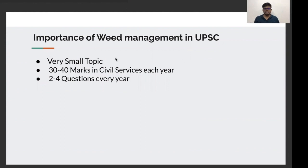We'll be going priority wise. The total weed management unit is a very small topic, and yet every year consistently UPPC is asking 30 to 40 marks worth of questions from weed management — two to four questions every year. Unlike other units where UPPC one year will ask three or four questions and the other year may not ask any, weed management is consistent. So if you have covered this, you can be sure that you will be scoring 30 to 40 marks in paper one.